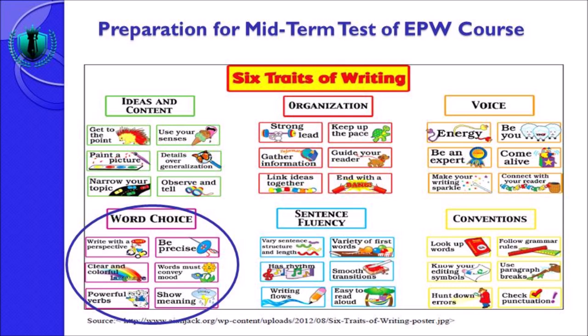Write with a perspective artinya anda menulis dengan perspektif anda sendiri — kita tidak perlu memikirkan perspektif orang lain ketika anda menulis, just go direct with your own perspective. Dalam dunia ini tidak ada prinsip semua orang setuju satu hal — kalau semua orang setuju dengan satu hal, yang akan terjadi hanya monolog, tidak ada dialog. So you have to write with a perspective.